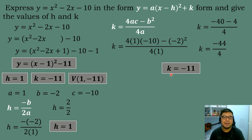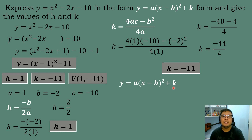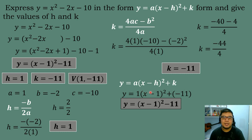So we have arrived at the same answer: vertex at (1, −11). After that, we use the vertex form formula y = a(x − h)² + k and substitute the values of h and k. With a = 1, h = 1, and k = −11: y = 1 × (x − 1)² + (−11). Simplifying, the vertex form is y = (x − 1)² − 11.